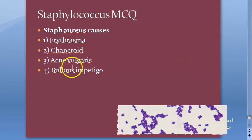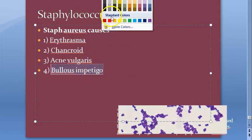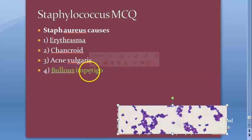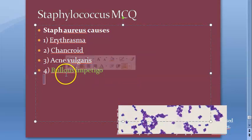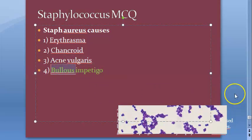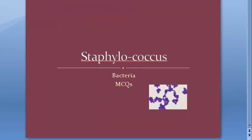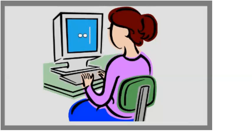Staph aureus causes bullous impetigo — yes. Impetigo can be non-bullous or bullous. Bullous impetigo is exclusively caused by staphylococcus aureus. So these were the MCQs of staphylococci. Hope you enjoyed this video — take care, we will meet in the next video.